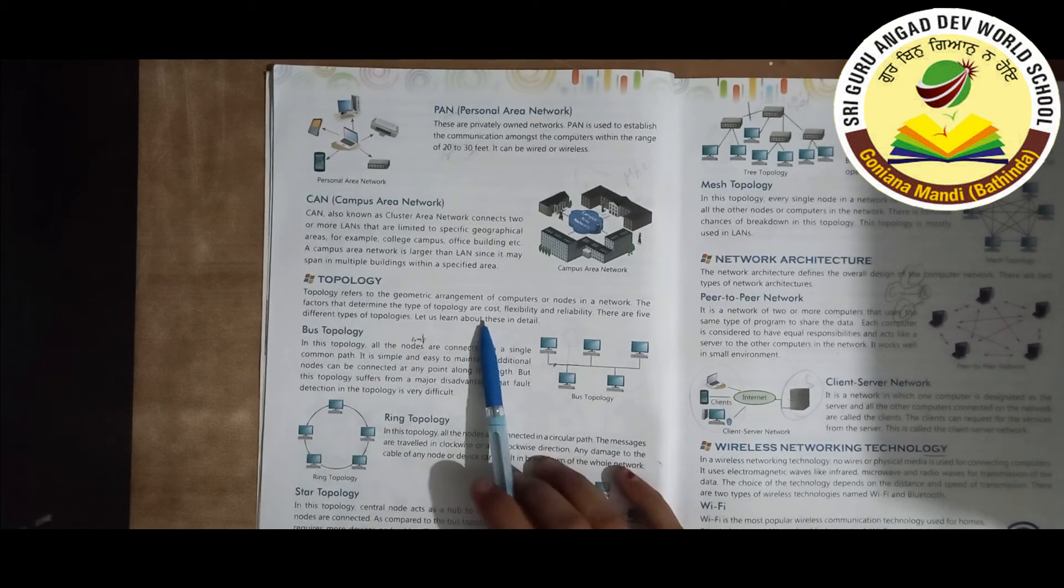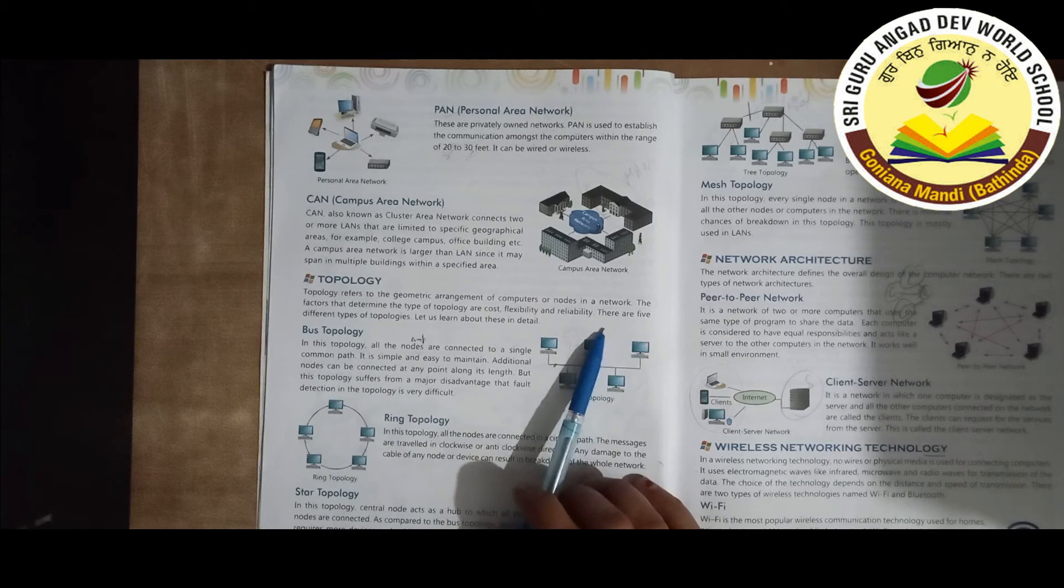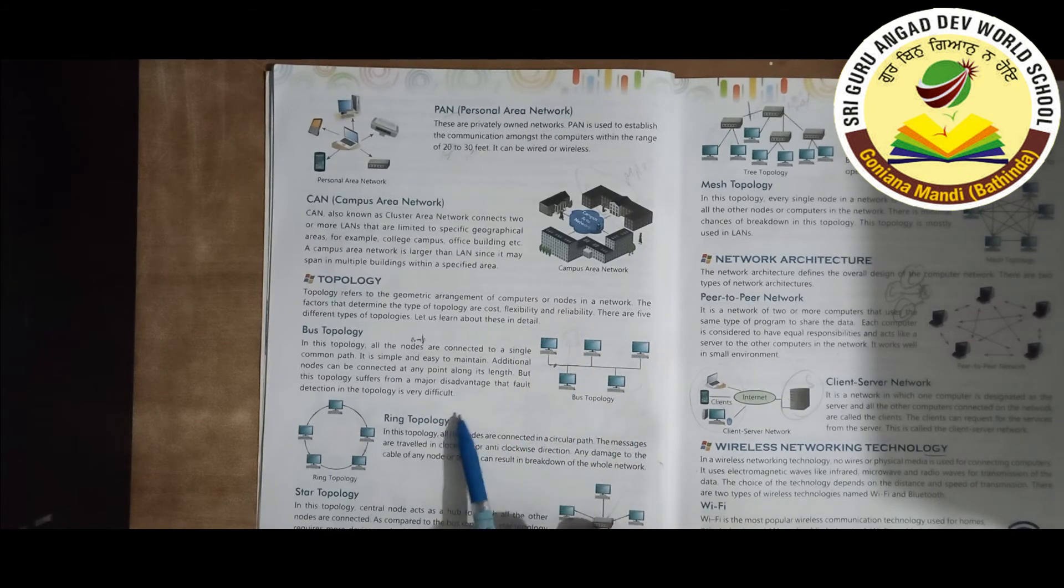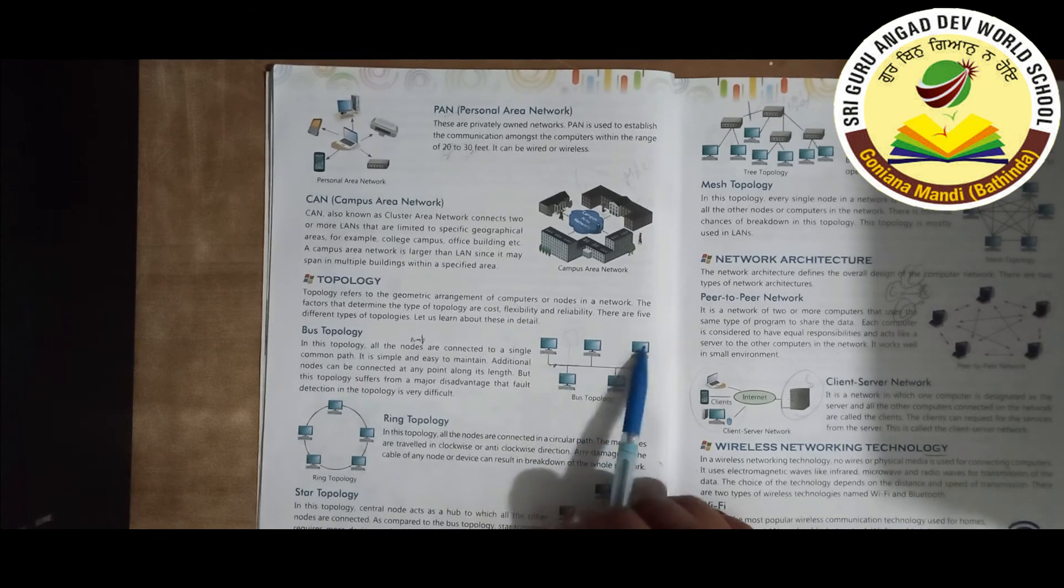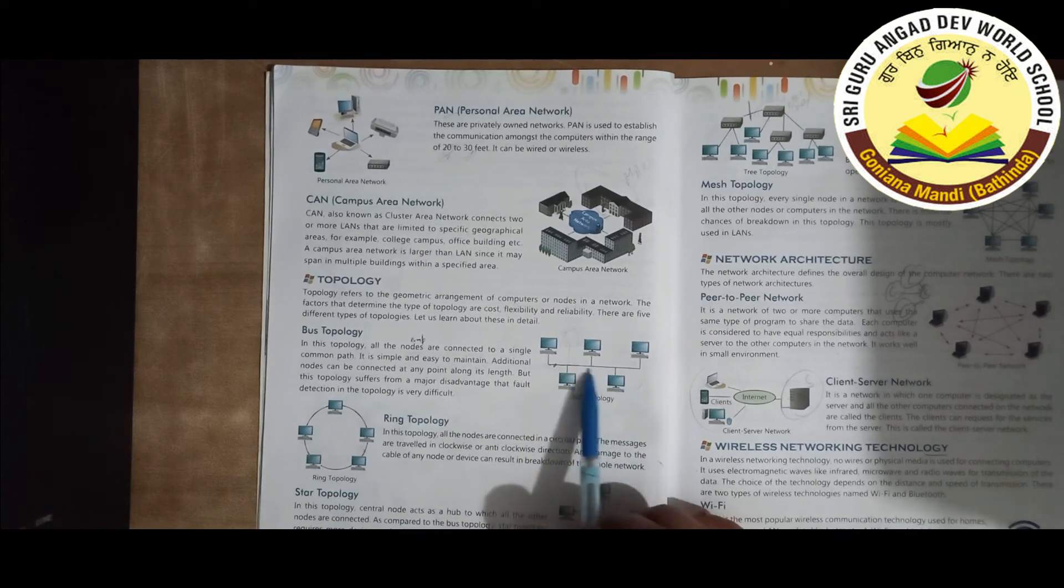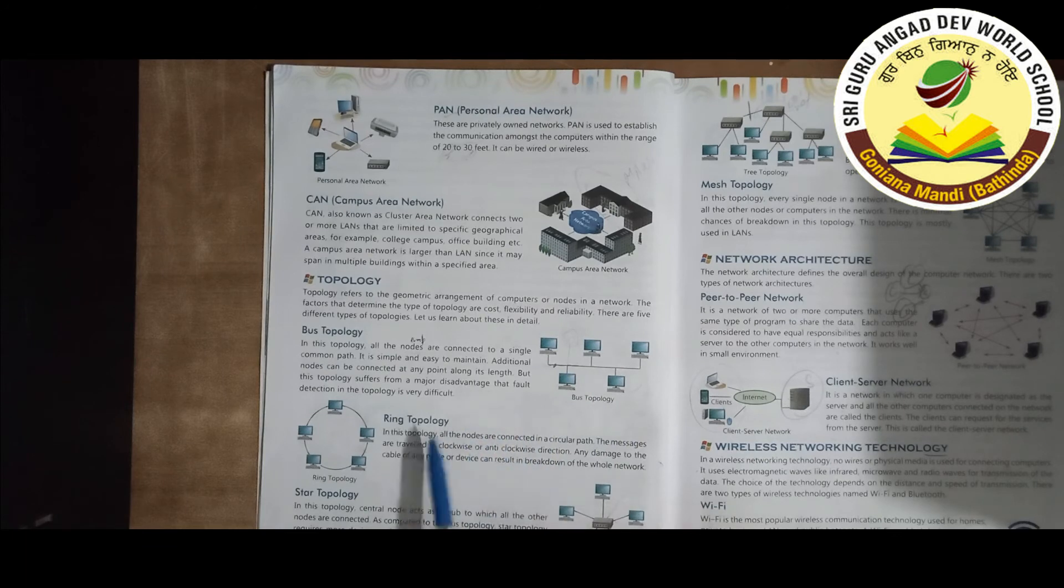Network Topology means which policy. Topology refers to geometric arrangement of computers and nodes. Bus topology means nodes are connected through wiring. Next is the ring topology, circular path networking.